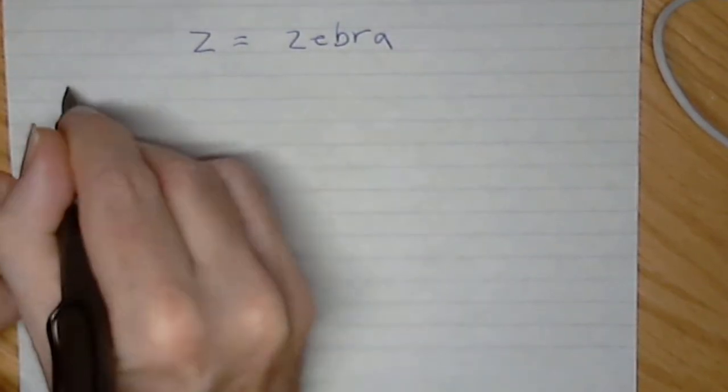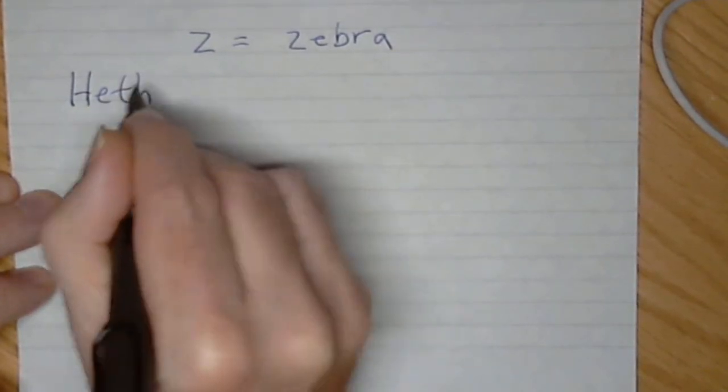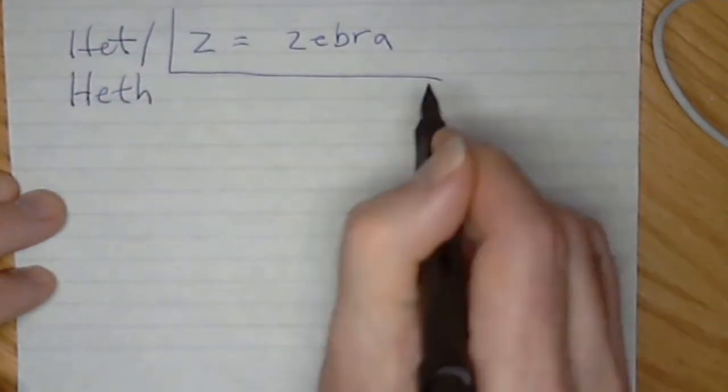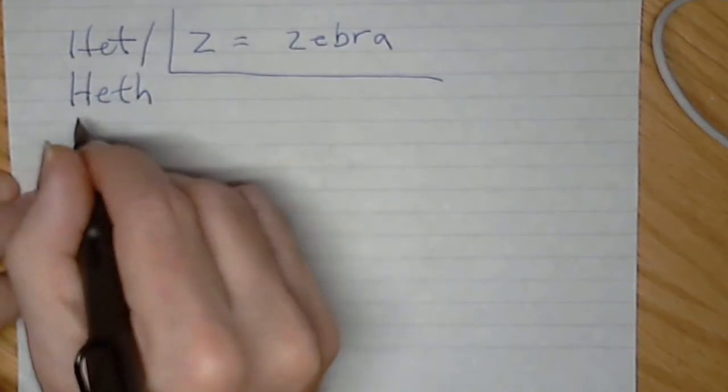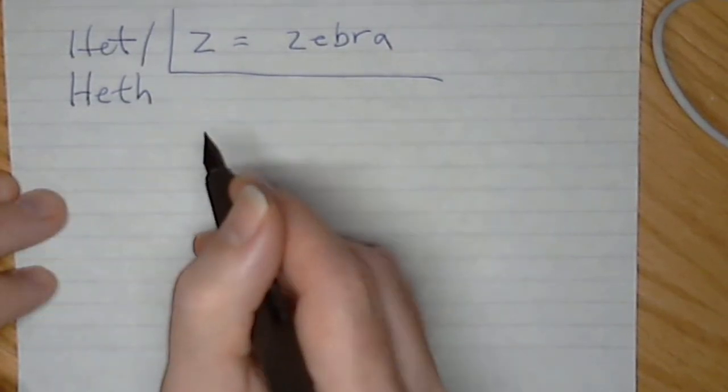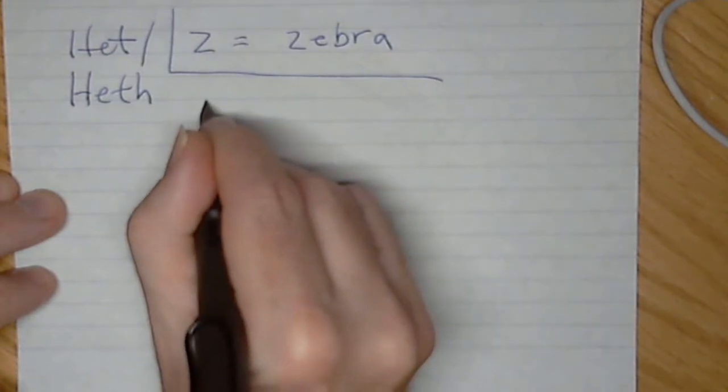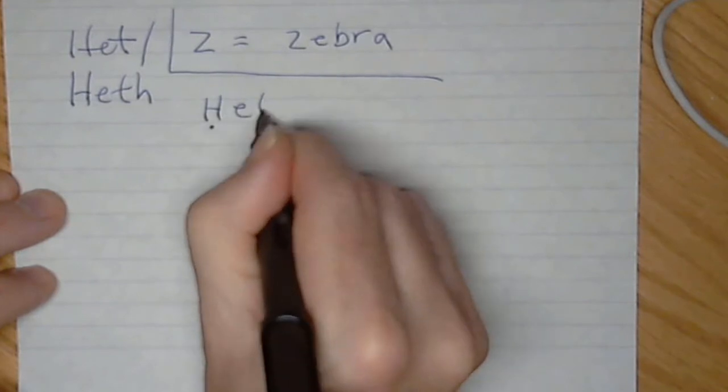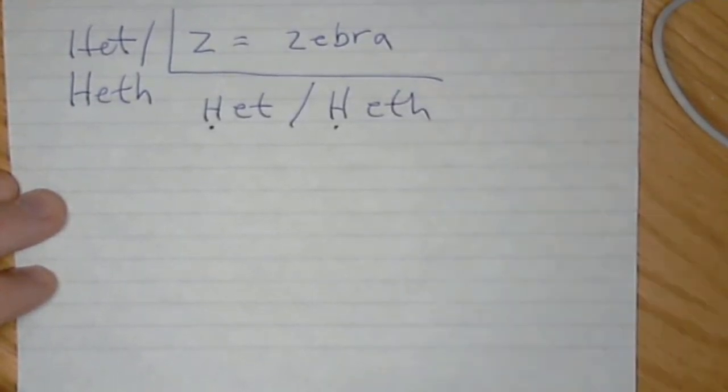That's often written H-E-T or H-E-T-H, and the transliteration for HET is not always standard. We could make this an H with a dot underneath it, so HET or HET.